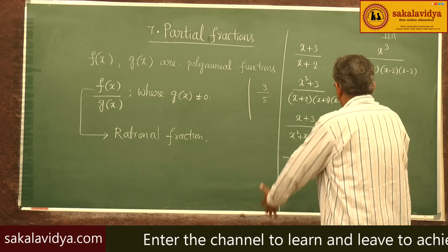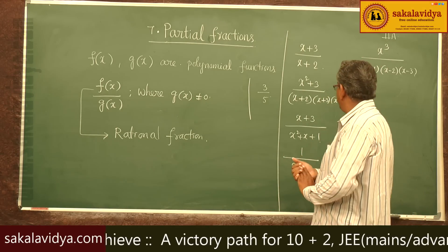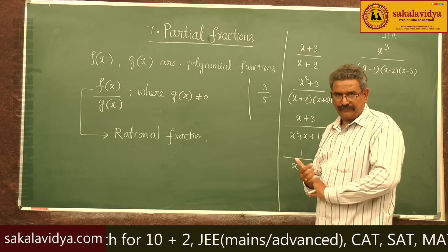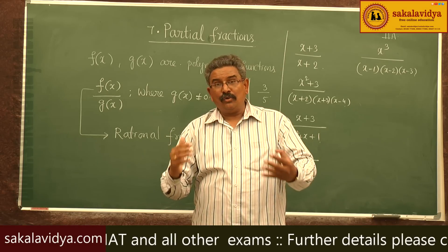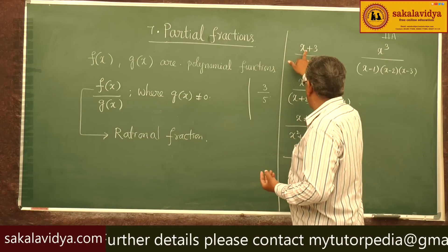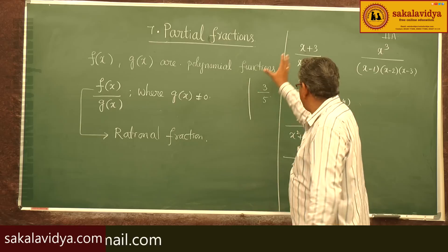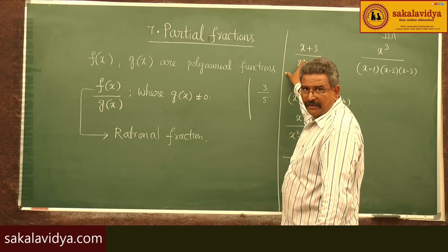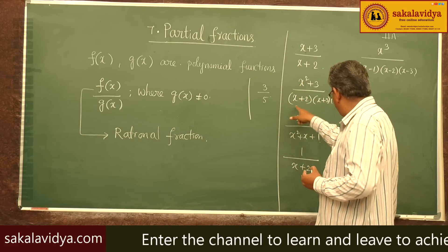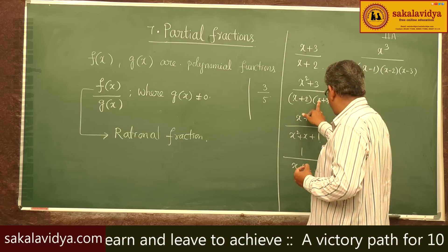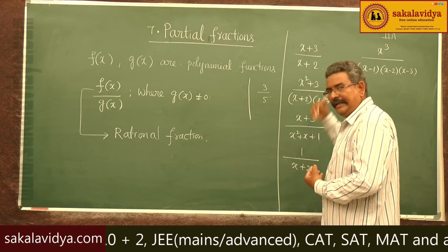Let us examine all these examples. For x+3 / x+2 — already in lower classes we have discussed the degree of a polynomial. The degree of x+3 is 1, and degree of x+2 is 1. So the numerator and denominator have the same degree. Now for the second example, the numerator degree is 2, and the denominator — x times x times x gives x³ — so the degree of the numerator is less than the degree of the denominator.